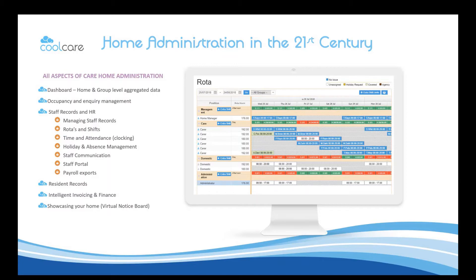You have the rostering and shift system. You also have time and attendance — clocking in and clocking out — which is intelligent within CoolCare 4, ensuring it only pays for when people are supposed to be working rather than when they arrived or left, and also applies your company payroll rules for breaks and absences.